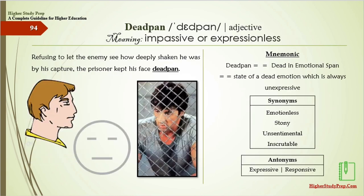Deadpan means impassive or expressionless. Mnemonic: deadpan — dead in emotional span, indicating a state of dead emotion which is always unexpressive. The synonyms are emotionless, stony, unsentimental, or inscrutable. The antonyms are expressive or responsive. Example: Refusing to let the enemy see how deeply shaken he was by his capture, the prisoner kept his face deadpan.